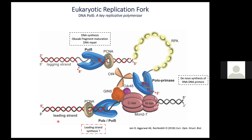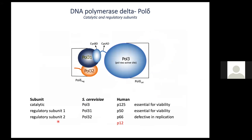Pol epsilon is thought to be the leading strand polymerase, but Pol delta can also participate in leading strand synthesis in the absence of Pol epsilon. In addition to DNA synthesis, Pol delta is required for the maturation of Okazaki fragments as well as DNA repair. It's not surprising that mutations in Pol delta have been associated with a large number of cancers and other diseases.